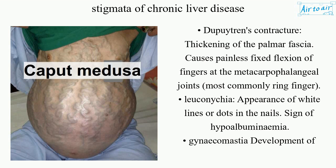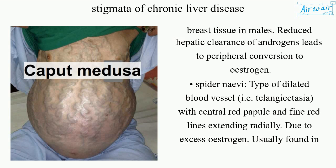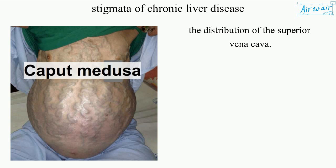Gynecomastia is the development of breast tissue in males, caused by reduced hepatic clearance of androgens, which leads to peripheral conversion to estrogen. Spider nevi are a type of dilated blood vessel, i.e., telangiectasia, with a central red papule and fine red lines extending radially, due to excess estrogen. They are usually found in the distribution of the superior vena cava.